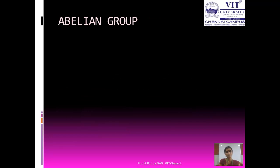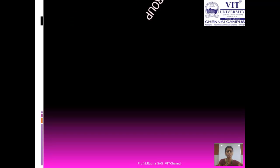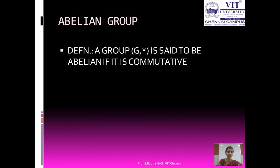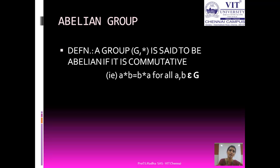Now let us see another type of group — a specialized group called the abelian group. We are all familiar with the commutative property. A group (G, star) is called an abelian group if it satisfies the commutative property — that is, for all a, b belonging to G, a star b is equal to b star a. If this is satisfied, then the group G is abelian under the operation star.